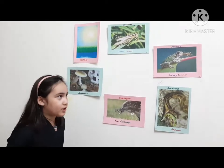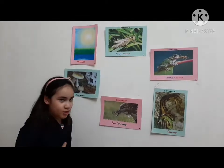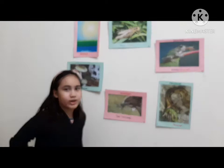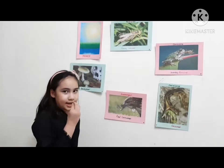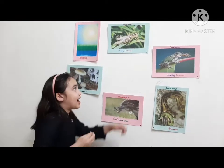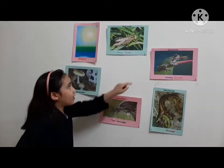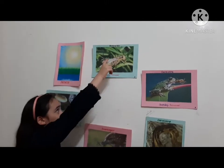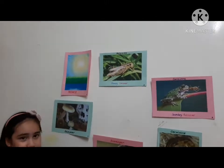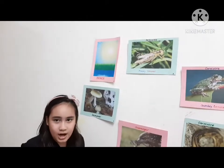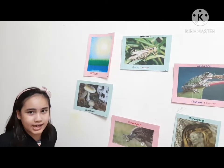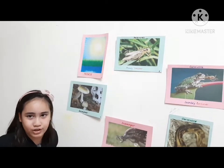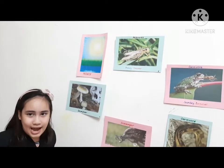Once upon a time, there was a hungry grasshopper eating grass. A grasshopper is a herbivore. A herbivore is an animal that eats only plants.